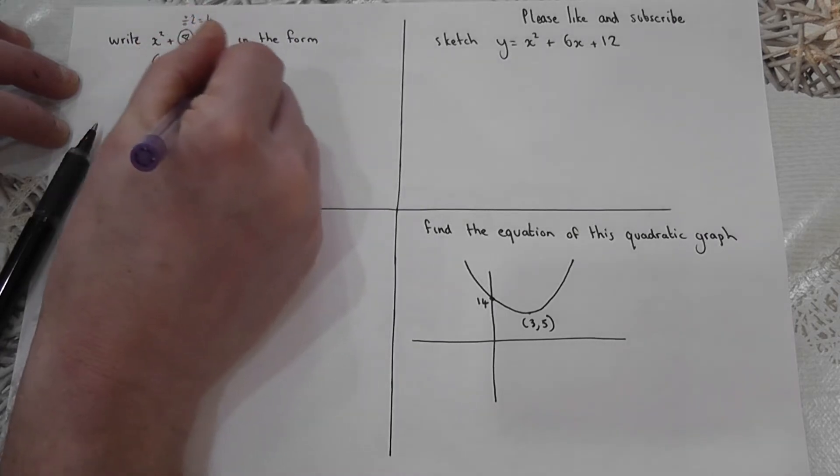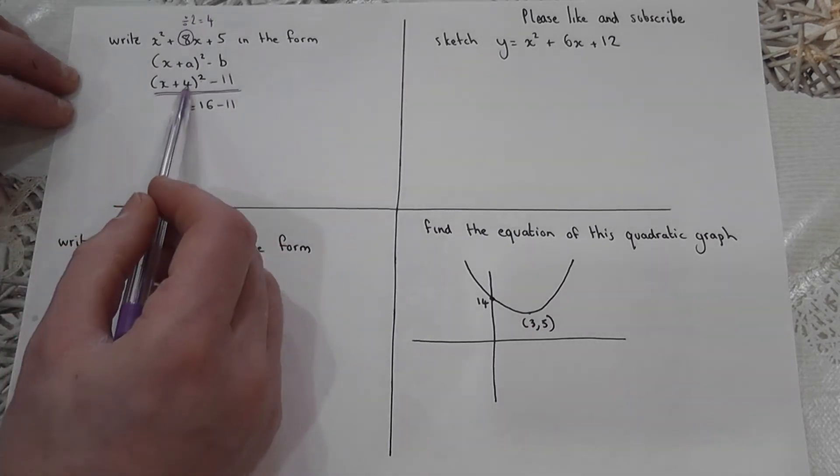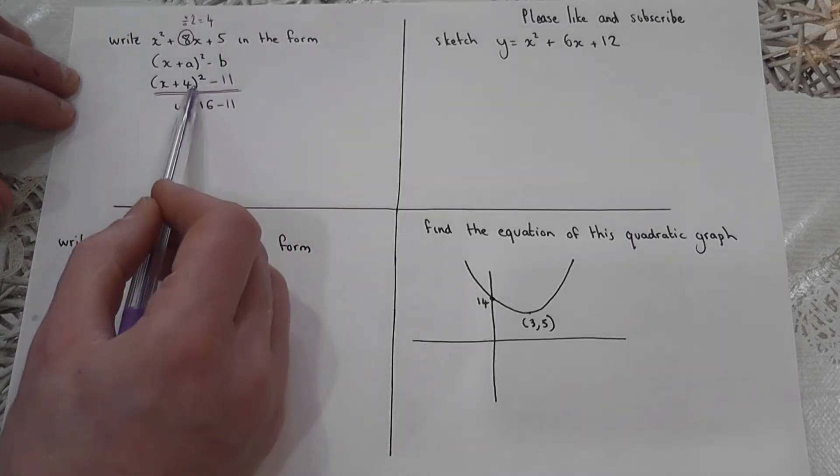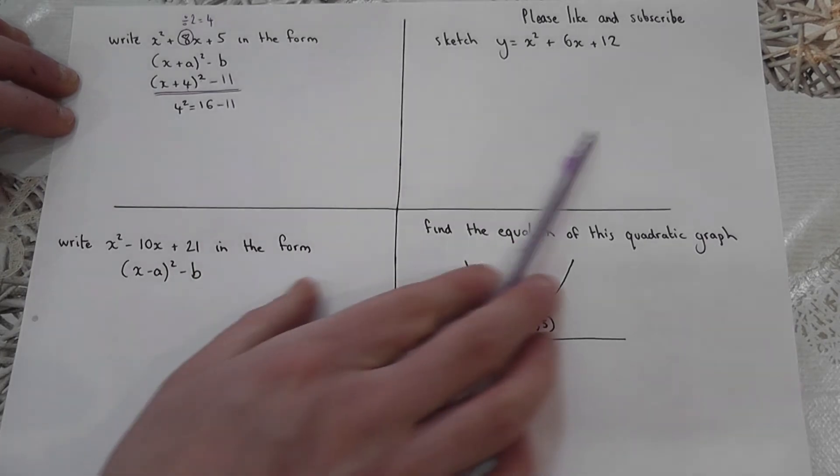And that is called completing the square. Again, golden rules: halve the eight to get four. Four squared is 16. I want a five, not a 16. So I've got to take away 11 to make it correct.